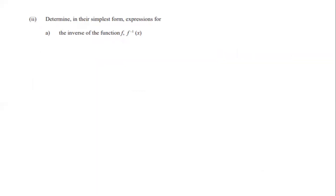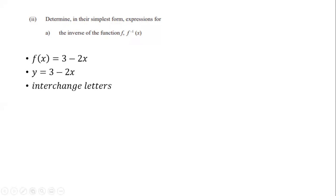Part 2 asks us to determine, in simplest form, the expression for the inverse of f — that is, f⁻¹(x). We know f(x) = 3 minus 2x. To find the inverse, we substitute x for y and y for x, then make y the subject. First, since f(x) is the same as y, we rewrite as y = 3 minus 2x. Then we interchange x and y, giving x = 3 minus 2y.